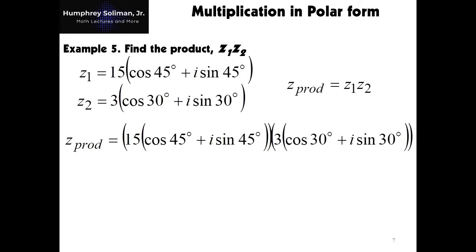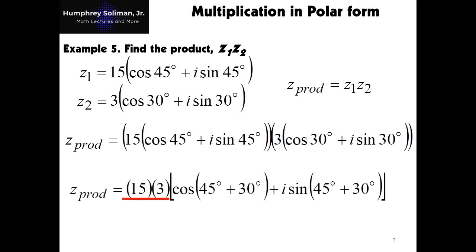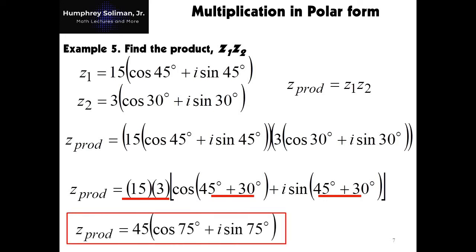In multiplying complex numbers in polar form, we need to multiply the moduli of z1 and z2, and then add the arguments of z1 and z2. This will give us our final answer: z prod equals 45 times the quantity cosine 75 degrees plus i times sine 75 degrees.